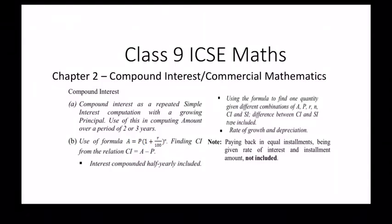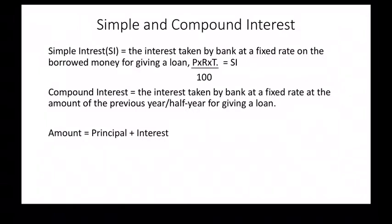Hello, welcome to another video. Today I'll talk about Class 9 ICSE Maths Chapter 2: Commercial Mathematics - Simple Interest and Compound Interest. Simple interest is the interest taken by a bank at a fixed rate on the borrowed money for giving a loan, or if you deposit into the bank. The formula is PRT divided by 100, where P is principal, R is rate, and T is time.